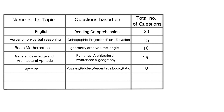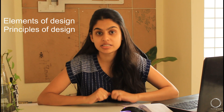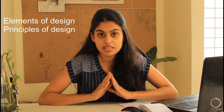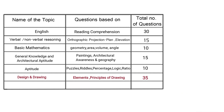Coming to the most important subject for NATA — elements of design and principles of design. These are very important in NATA and any other design exam, and there were about 35 questions from this subject. These are the fundamentals of design and hence carry a lot of weightage in any kind of design exam. With this, Part B comes to about 115 questions.